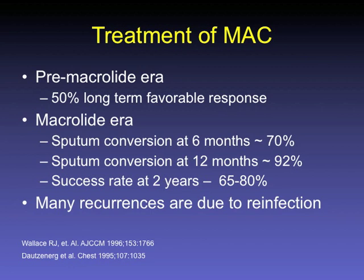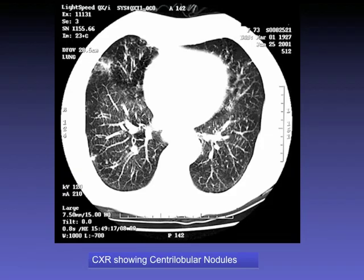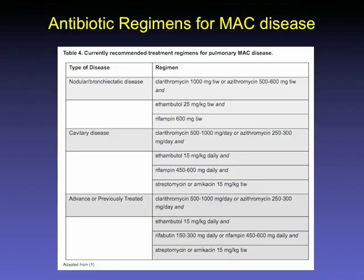MAC was much more difficult to treat before the macrolide era. In the macrolide era, sputum conversion is much better with a 65–80% success rate at two years. When patients fail to respond with positive sputum cultures, it's often due to reinfection. The antibiotic regimens for MAC disease, from the 2007 guidelines, are well summarized: for nodular bronchiectatic disease, you can usually treat three times a week.